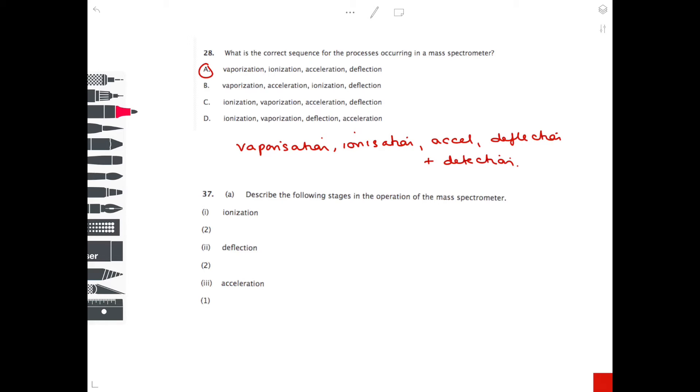Deflection now. Remember that is when the high speed ions are deflected by the magnetic plates. And remember, the smaller the mass and the higher the charge, so the larger the mass to charge ratio, the more the ion is deflected.